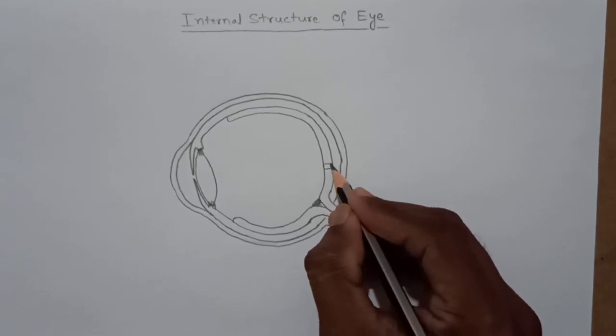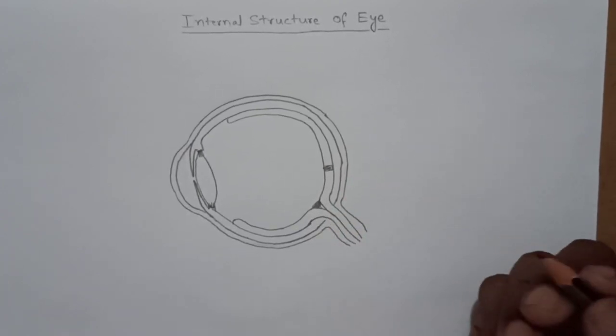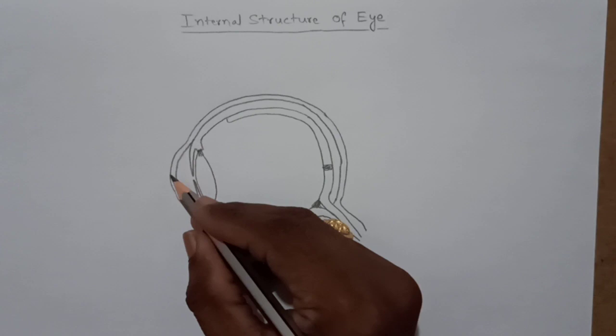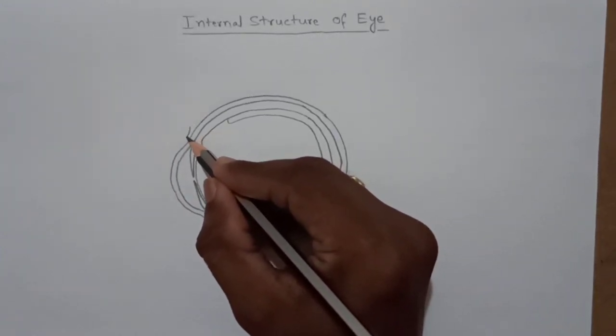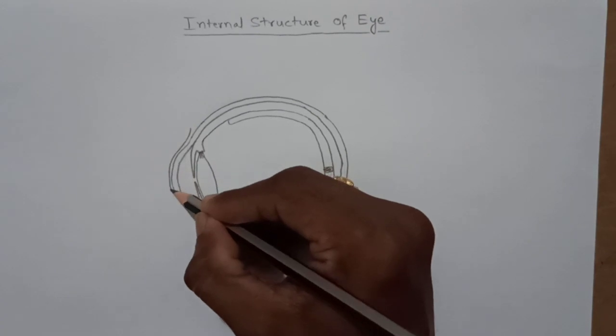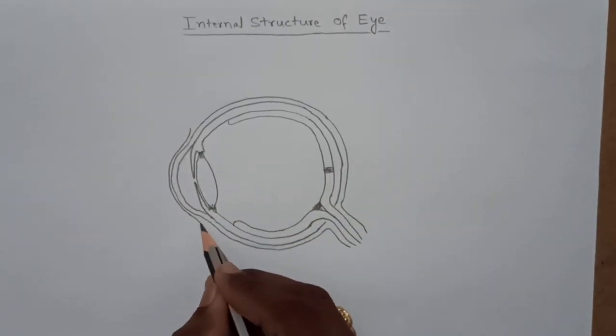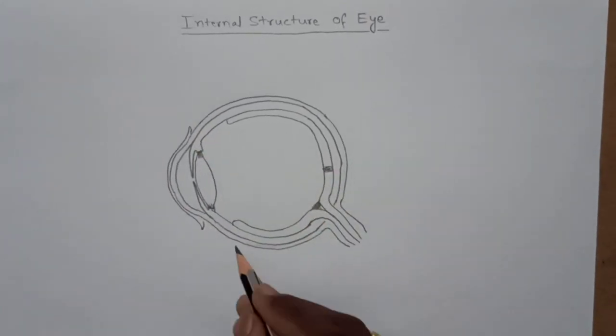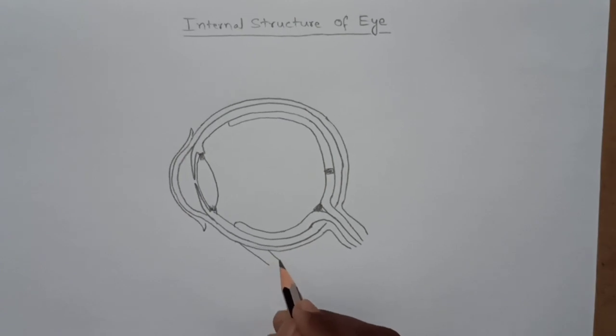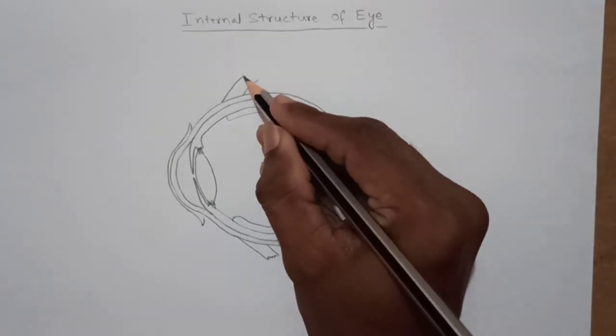And over the cornea, we can observe a protective layer to protect the transparent part of the cornea. It is called conjunctiva. And we can observe the muscles which help in the movement of the eyes.